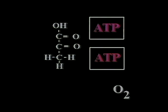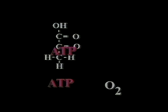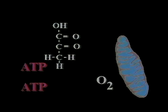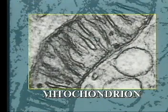Next, the pyruvic acid passes into a minute cellular organelle called a mitochondrion. The many mitochondria embedded in the cytoplasm of each cell may be called the powerhouses of the cell, for it is within these organelles that most of the cell's energy-rich ATP is produced.